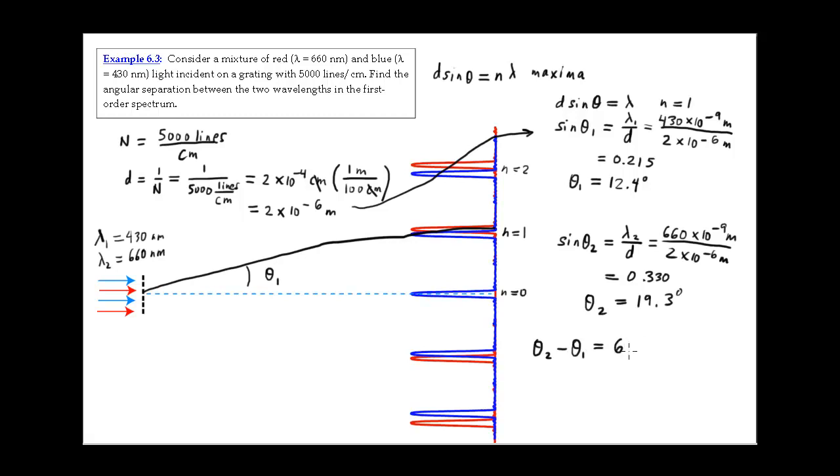So the answer to the question is theta 2 minus theta 1 and we can see if we take that difference we get 6.9 degrees. So that's the answer to the question but the reason we're asking the question is to know whether we would be able to detect the two wavelength lines at significantly different angles. And so we see they're 6.9 degrees apart and that's going to be a pretty large separation. So these we would expect would be relatively easy to distinguish.